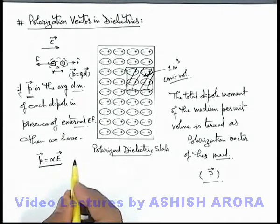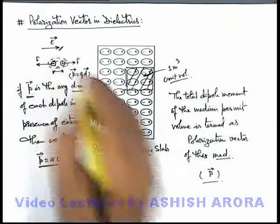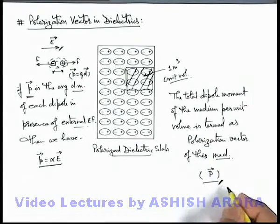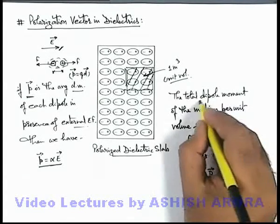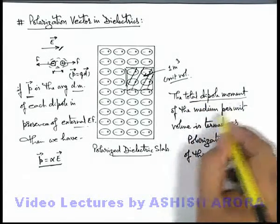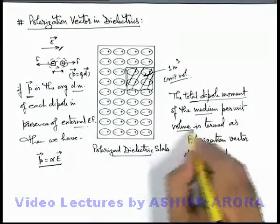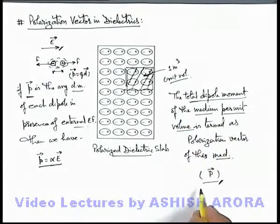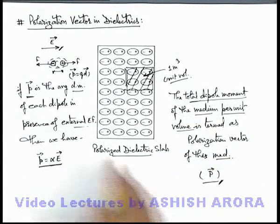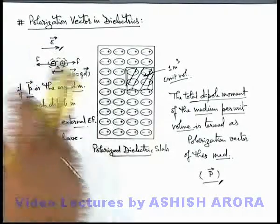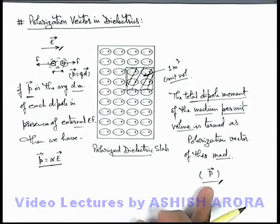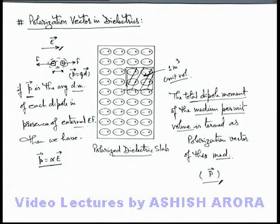So obviously if the external electric field is increasing, the polarization vector also increases because it gives us the total dipole moment in the medium per unit volume. So be careful about the idea of how the polarization vector is defined. In detail, we'll study the polarization vector in the advanced physics lectures of Physics Galaxy.